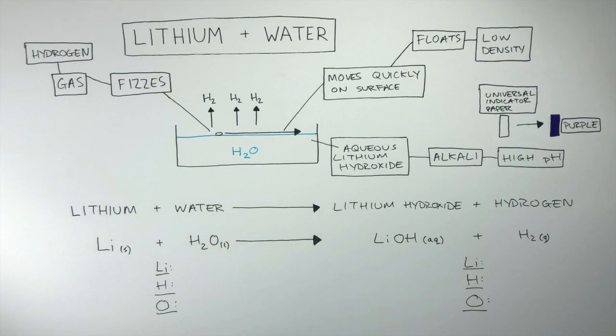We can see when counting up the atoms on the reactant side, there is one lithium atom and then on the product side, there is one lithium atom as well. On the reactants, there are two hydrogen atoms present and on the product side, there are three hydrogen atoms. On the reactant side, there is one oxygen atom and on the product side, there is one oxygen atom.